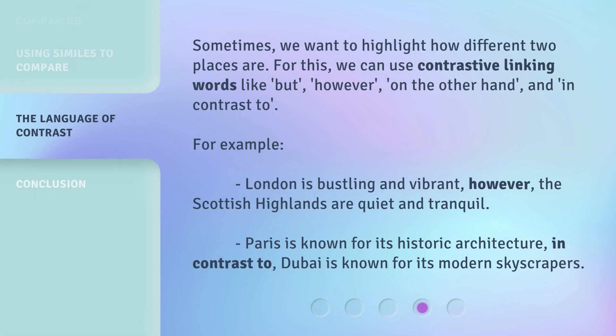Sometimes we want to highlight how different two places are. For this, we can use contrastive linking words like 'but,' 'however,' 'on the other hand,' and 'in contrast to.' For example: 'London is bustling and vibrant. However, the Scottish Highlands are quiet and tranquil.' 'Paris is known for its historic architecture. In contrast to, Dubai is known for its modern skyscrapers.'